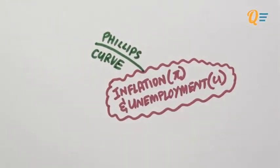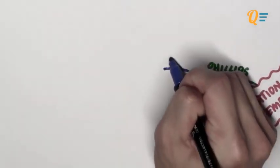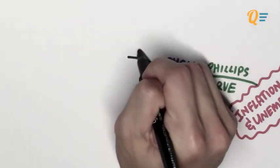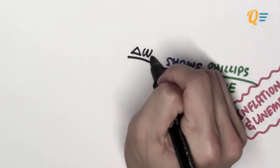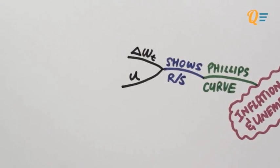The first thing we need to understand is what is the Phillips Curve. The Phillips Curve shows the relationship between two very important variables in an economy. The first variable is the rate of change of the nominal wage, and the second variable is the unemployment rate.